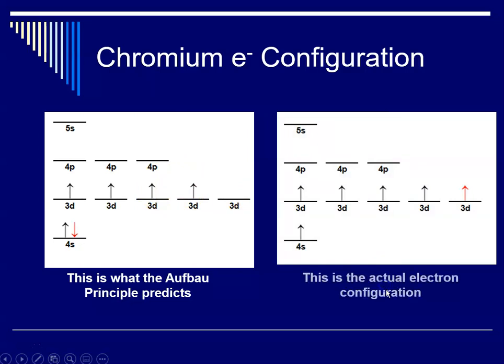This is what the Aufbau principle would predict with a full 4s, and then the last four electrons would go into the d sublevel, so you would have the fifth d orbital is empty. What actually occurs though is that the electron from the 4s actually goes up and enters the 3d. So it actually turns out that chromium has 4s¹, only one electron, and 3d⁵. And why does this happen? Apparently having one electron in each of the d orbitals is more stable, meaning lower energy, than what the Aufbau would predict.